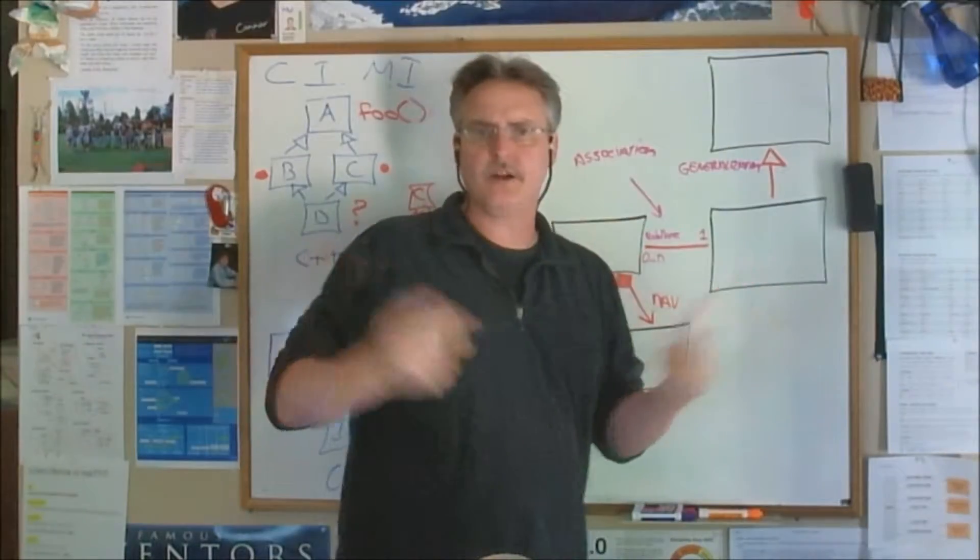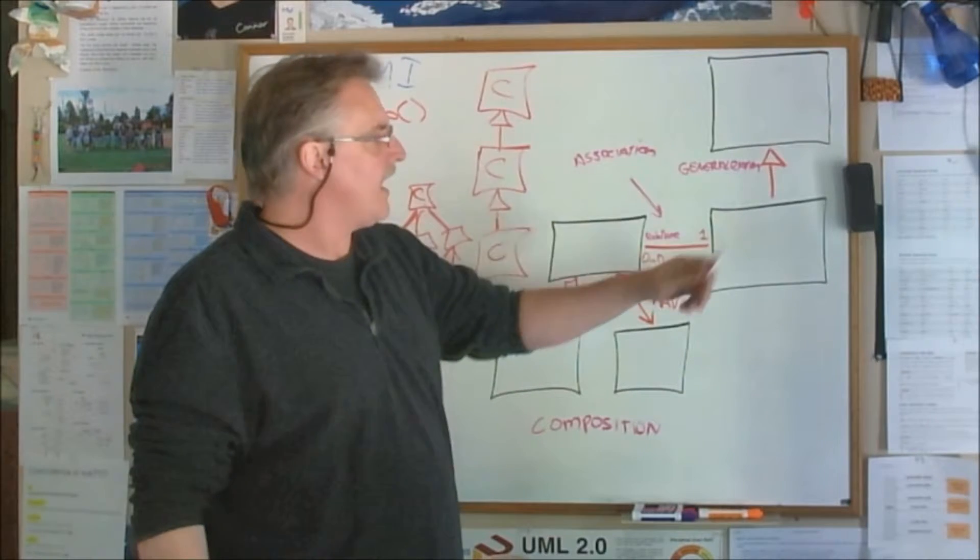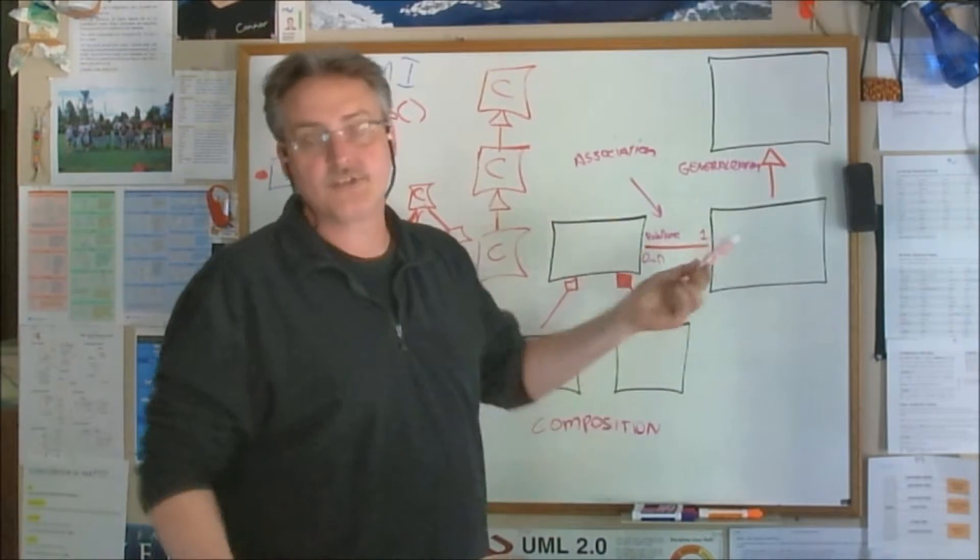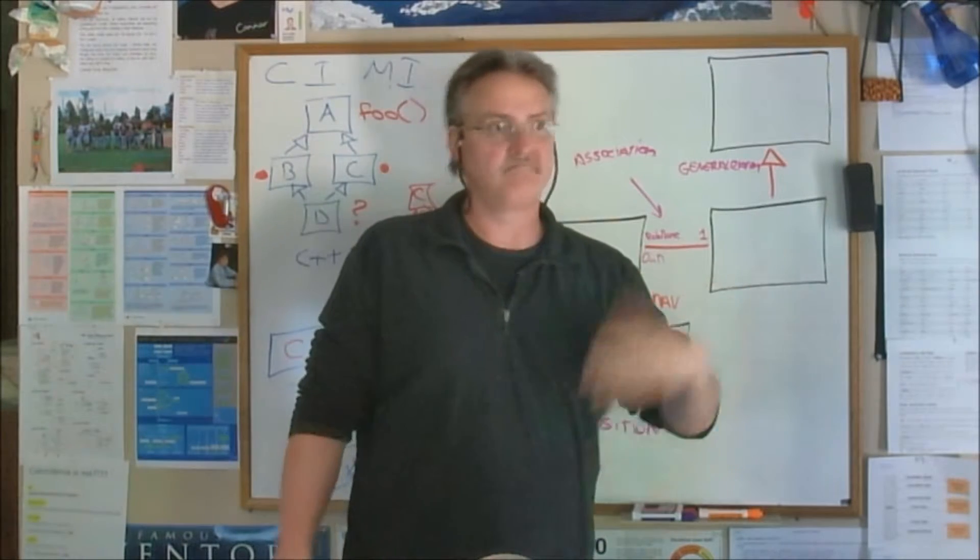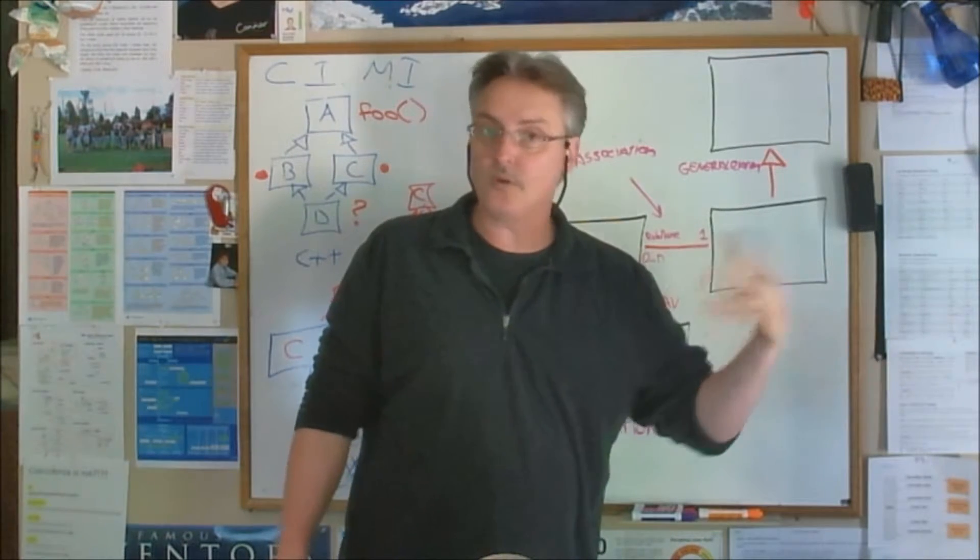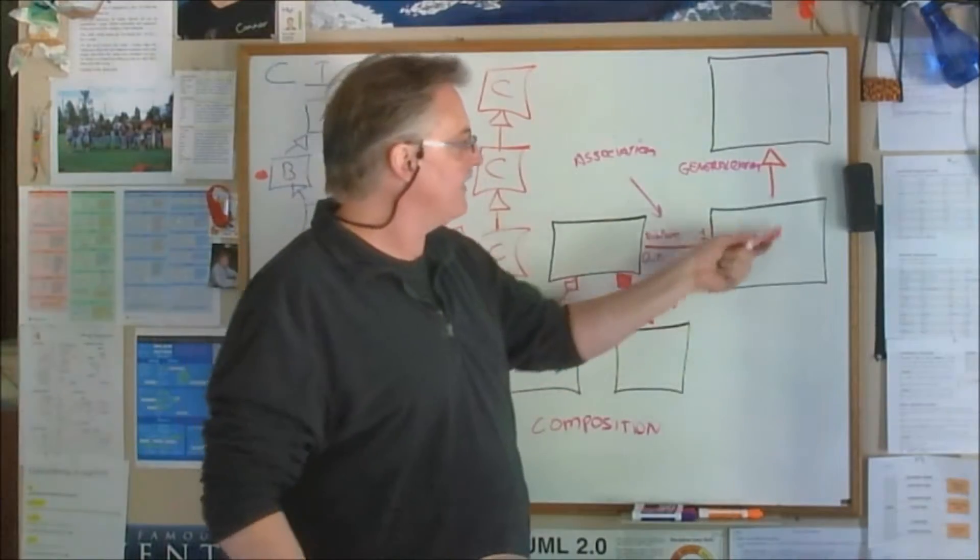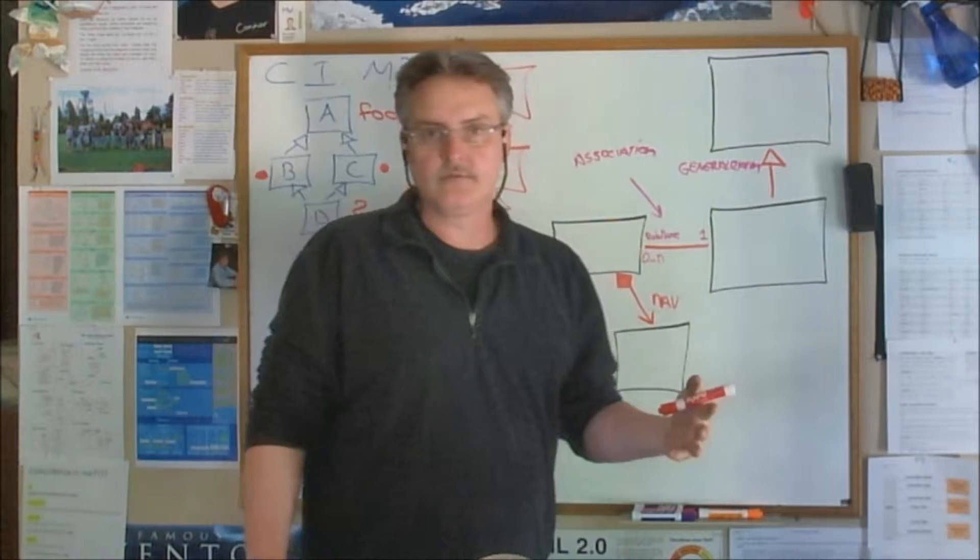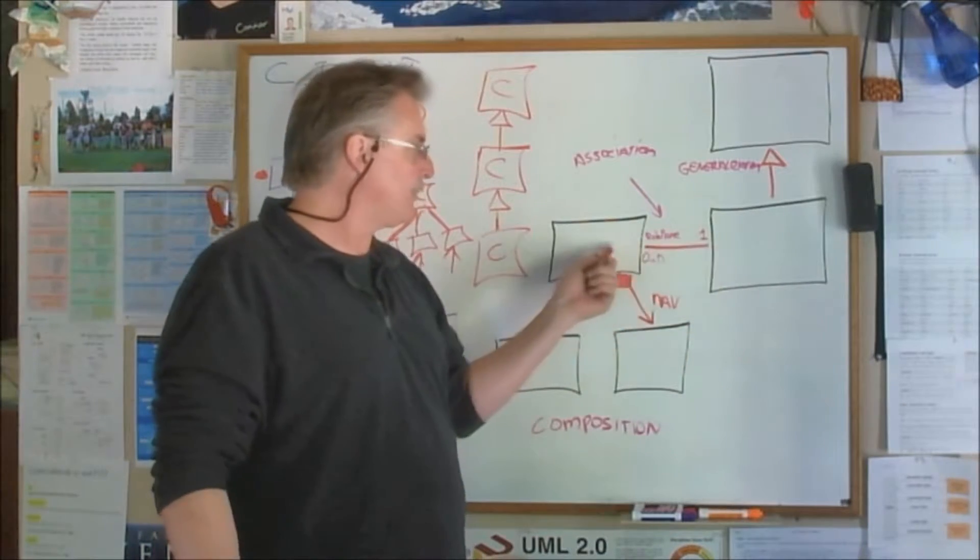There's lots of adornments in UML. Let's say this is a class and this is a class. The big empty triangle means generalization. That means inheritance, interface or class, whatever this is. This inherits from this.